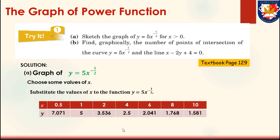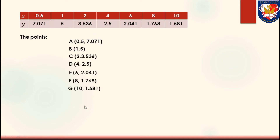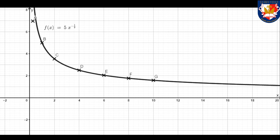Now we have some points as pairs of x and y. Here is the list: point A is (0.5, 7.071), point B is (1, 5), point C is (2, 3.536), and so on until point G. Now we will plot all the points on the Cartesian diagram and connect them smoothly. That is the curve we are looking for.